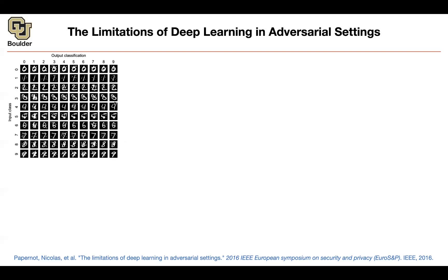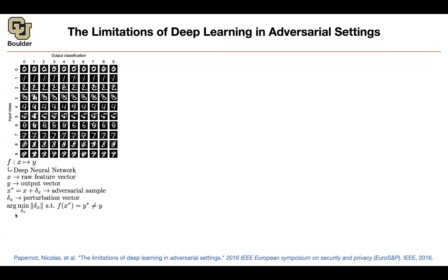You have a deep neural network with some raw feature vector — think of features as pixels. A bunch of raw pixel values give you an image, and then you have an output vector coming out of your deep neural network. You want to perturb your image a little bit by delta to obtain x star, where delta is the perturbation vector. At the same time, you want the perturbation to be small so a human cannot notice it, and you want your adversarial example to be classified as a chosen target. The idea of this paper is the adversarial saliency map.